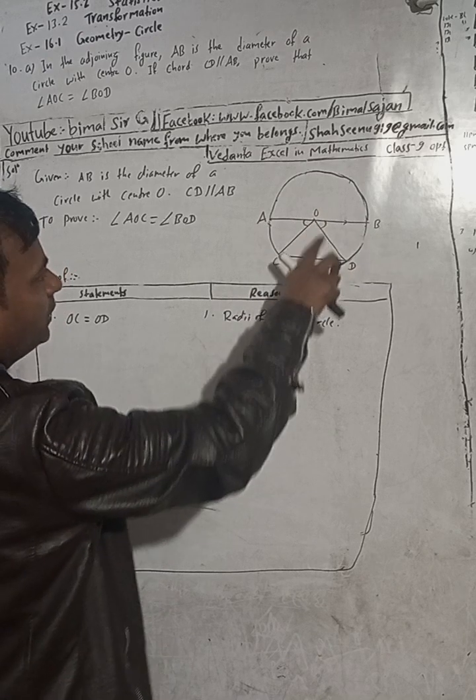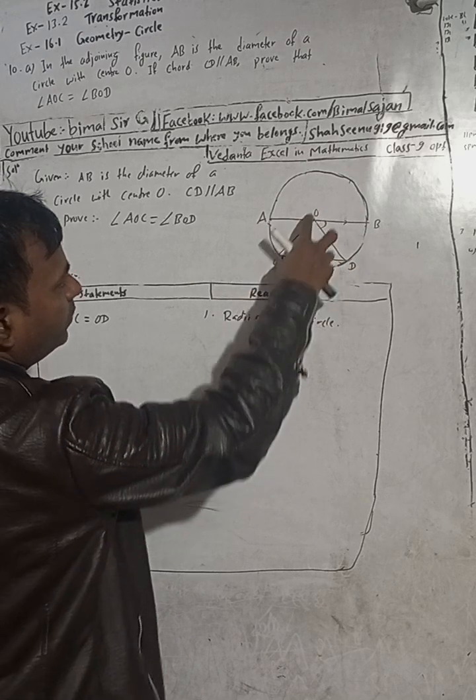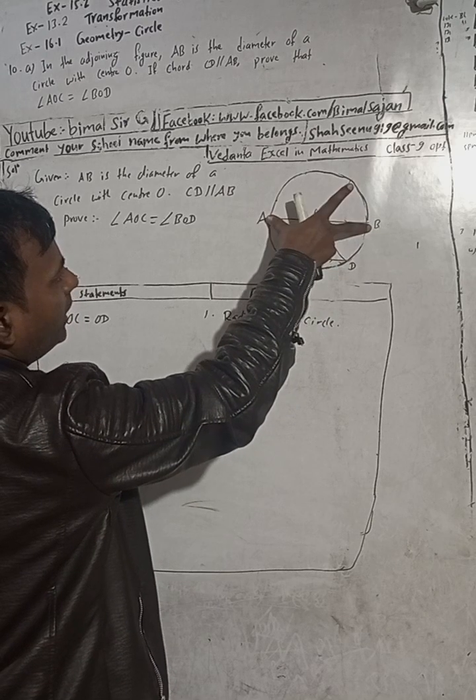OC is equal to OD. The reason for this is radii of the same circle.